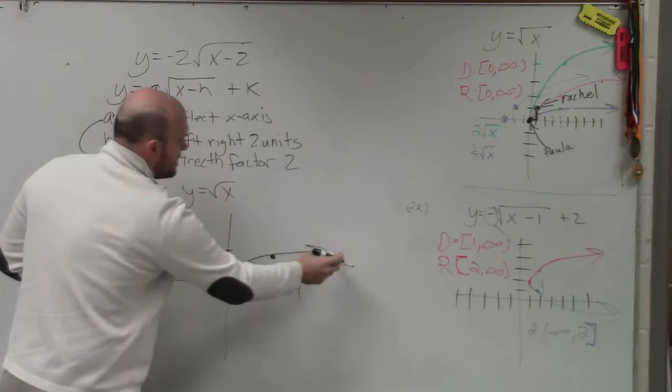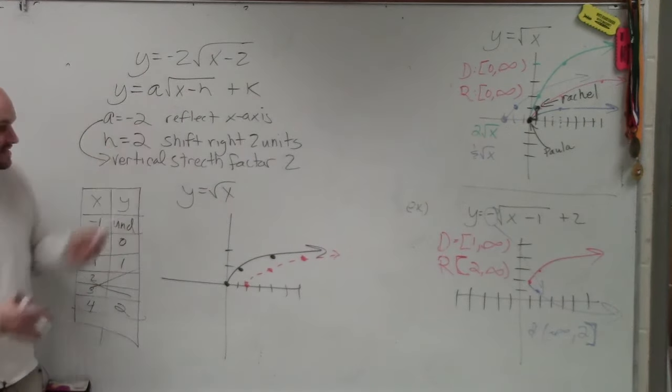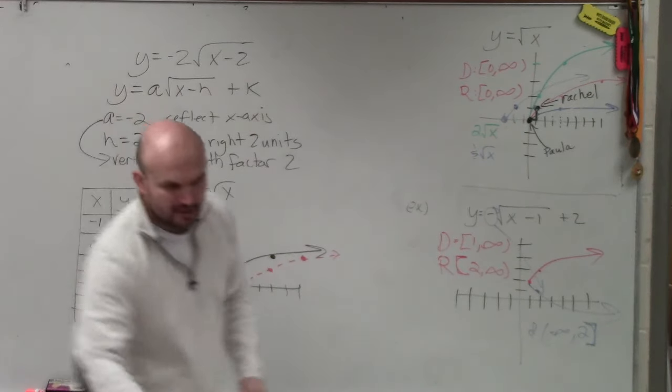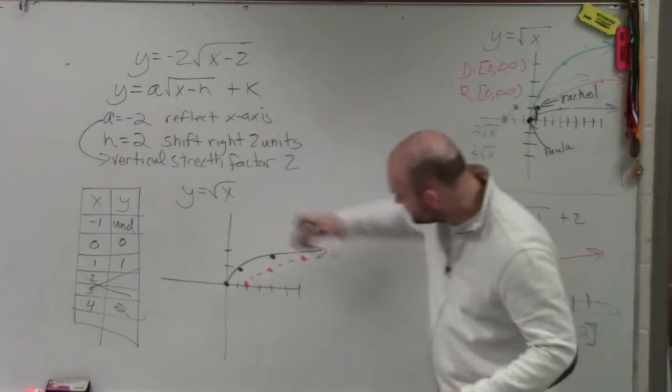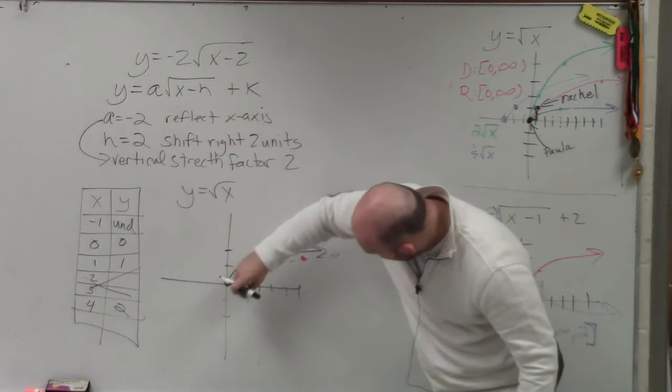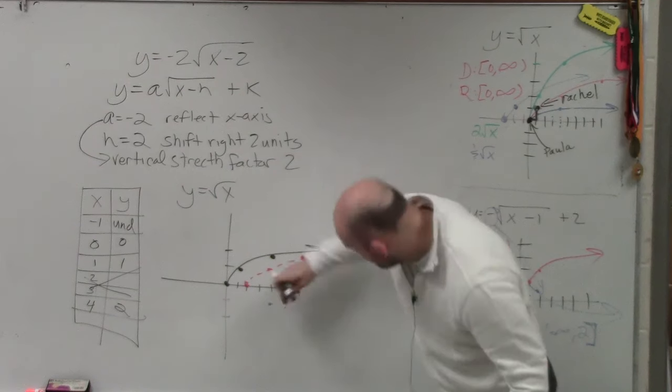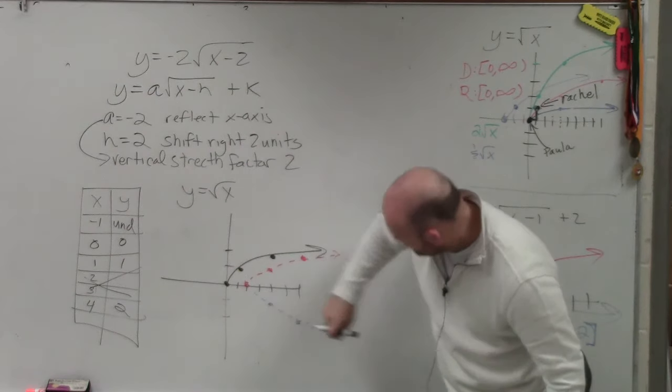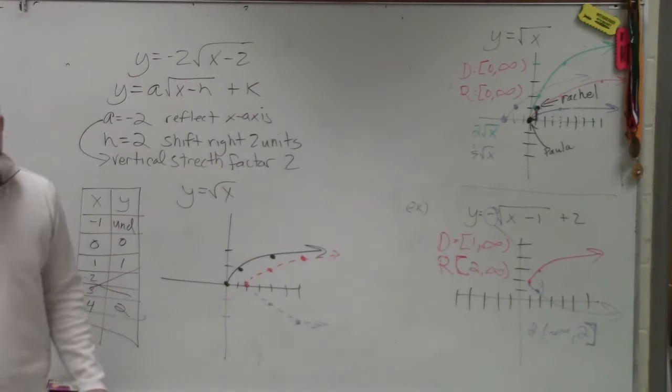Then what else is happening to the graph? Well, the graph is now being reflected about the x-axis. So instead of the graph going up, it's now being reflected down. So now all of the points that I just found, I'm going to reflect about the x-axis. So instead of going up, I'm now going to go down. Does everybody see how my graph is now being reflected?